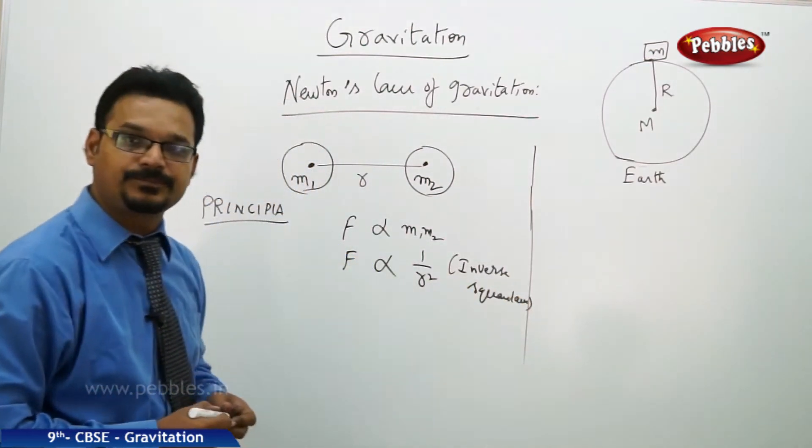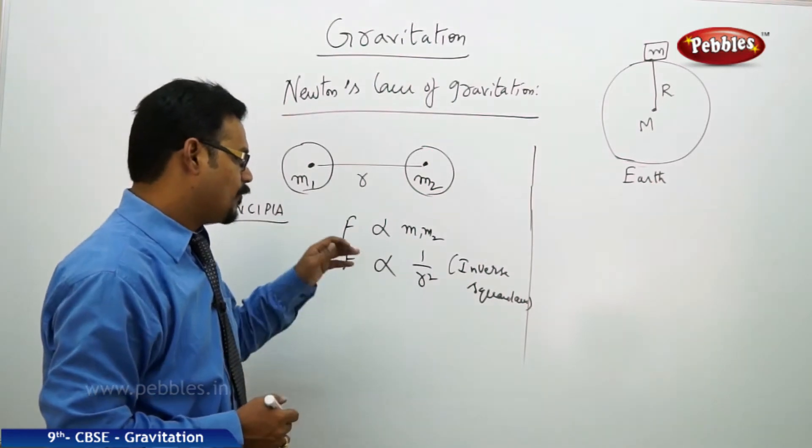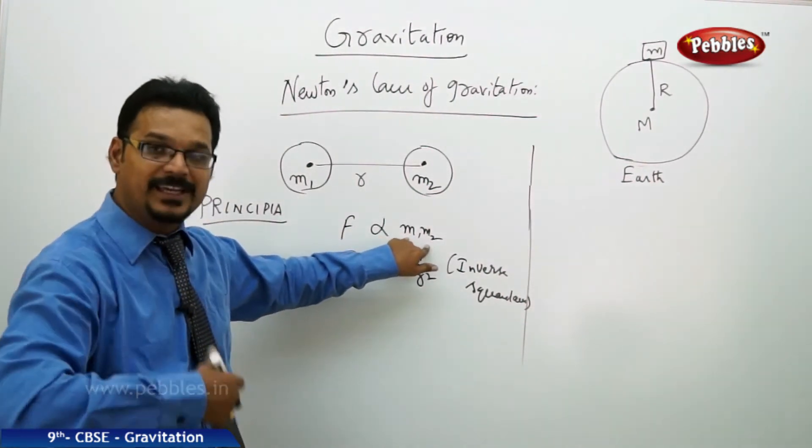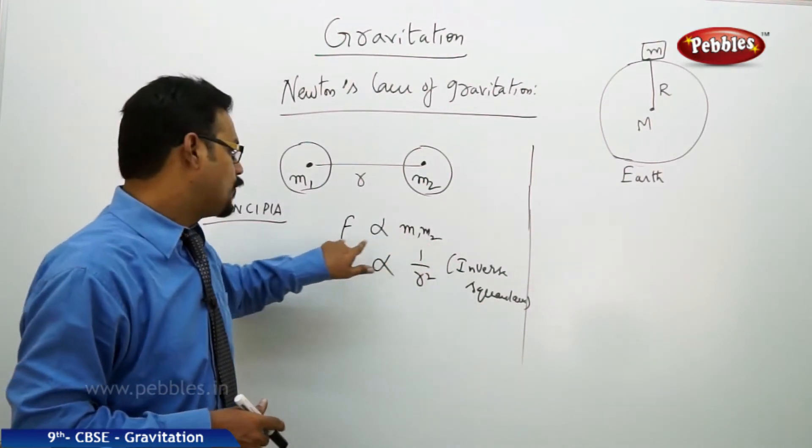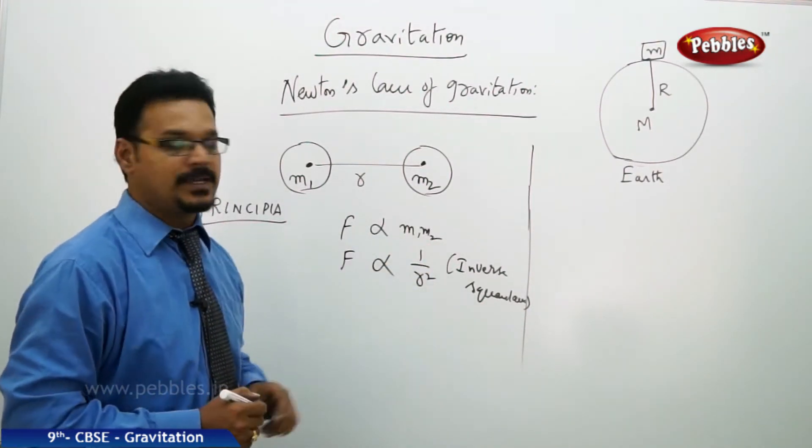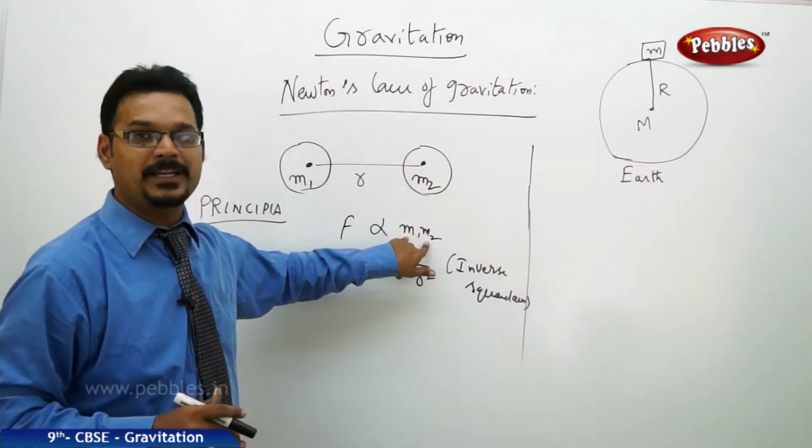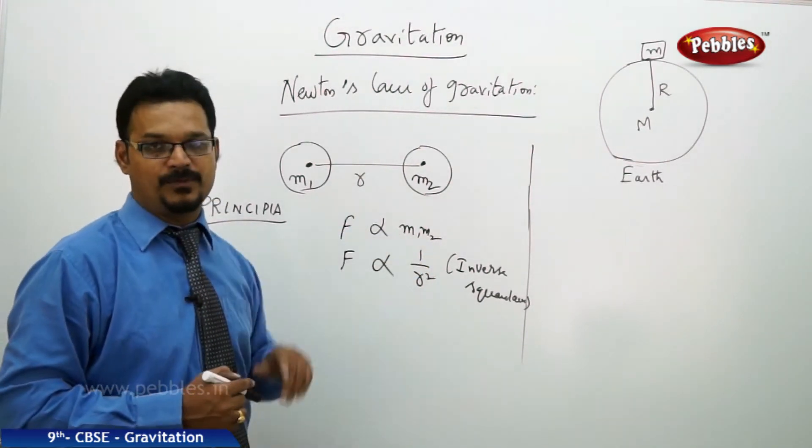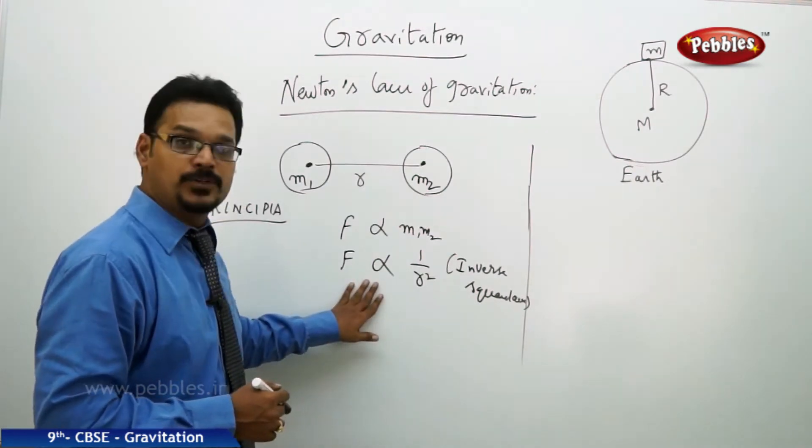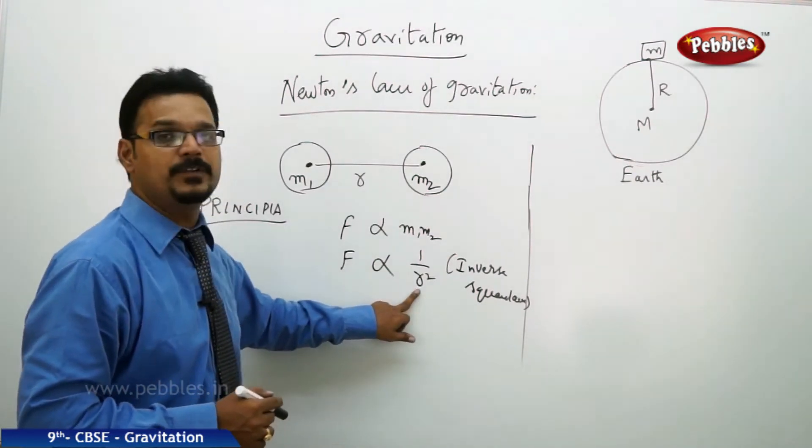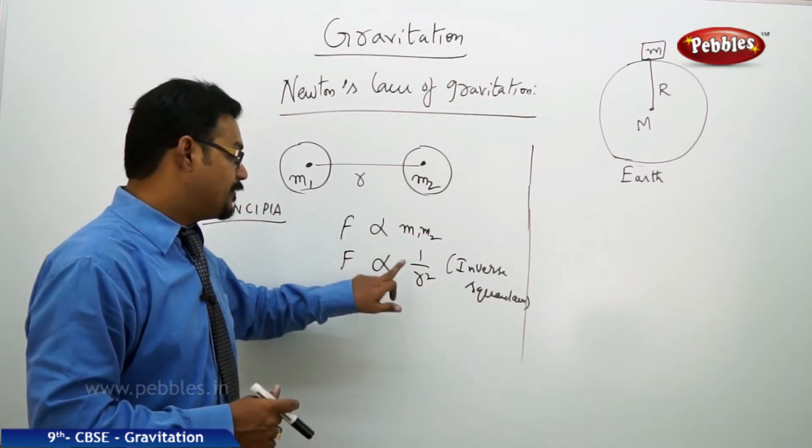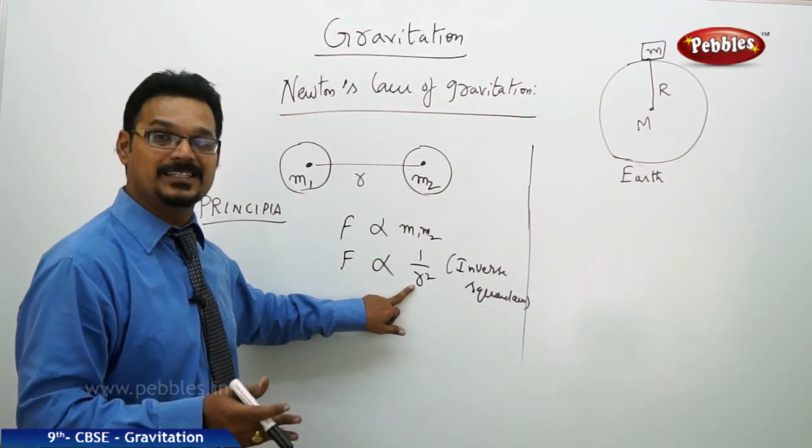What Isaac Newton was expressing is that if masses increase their magnitude, then the force between them also increases. If masses decrease their magnitudes, force also decreases - that's called directly proportional.